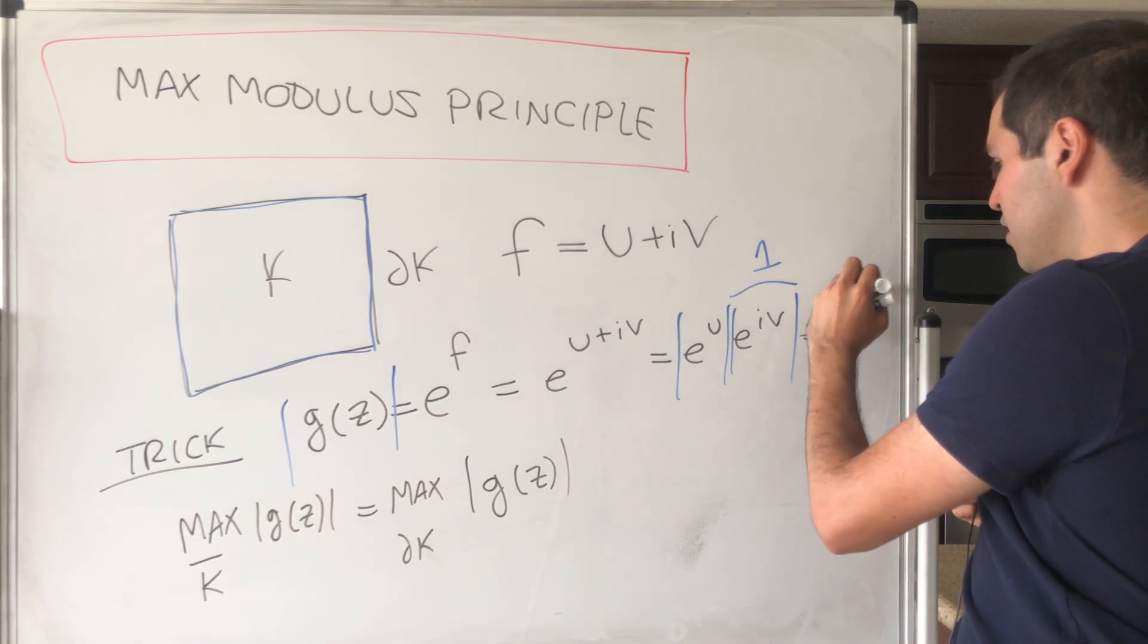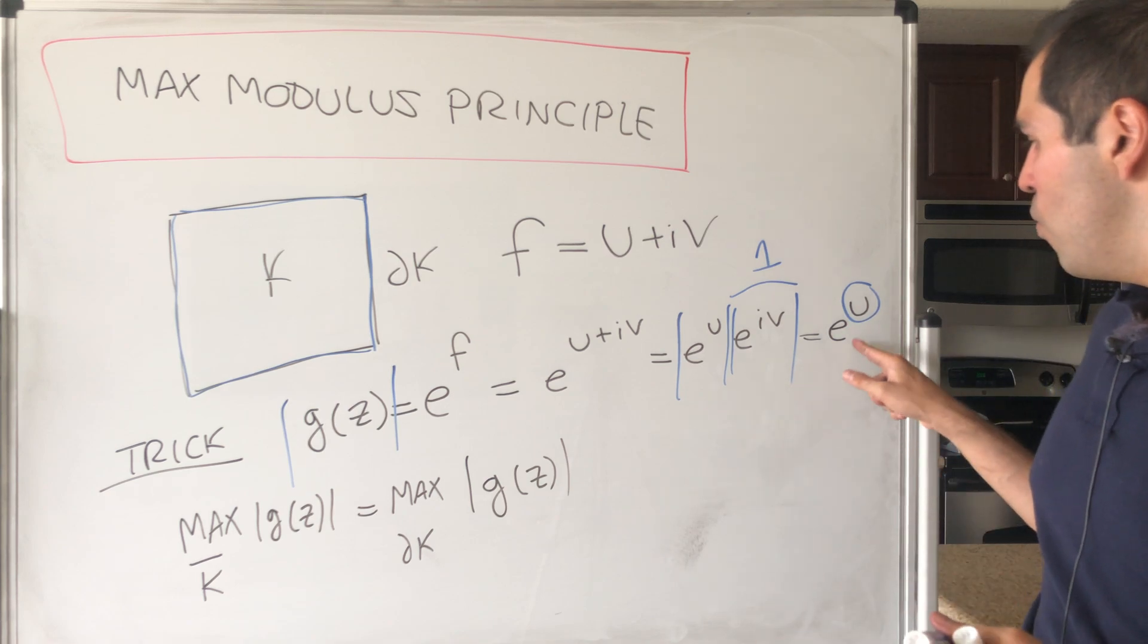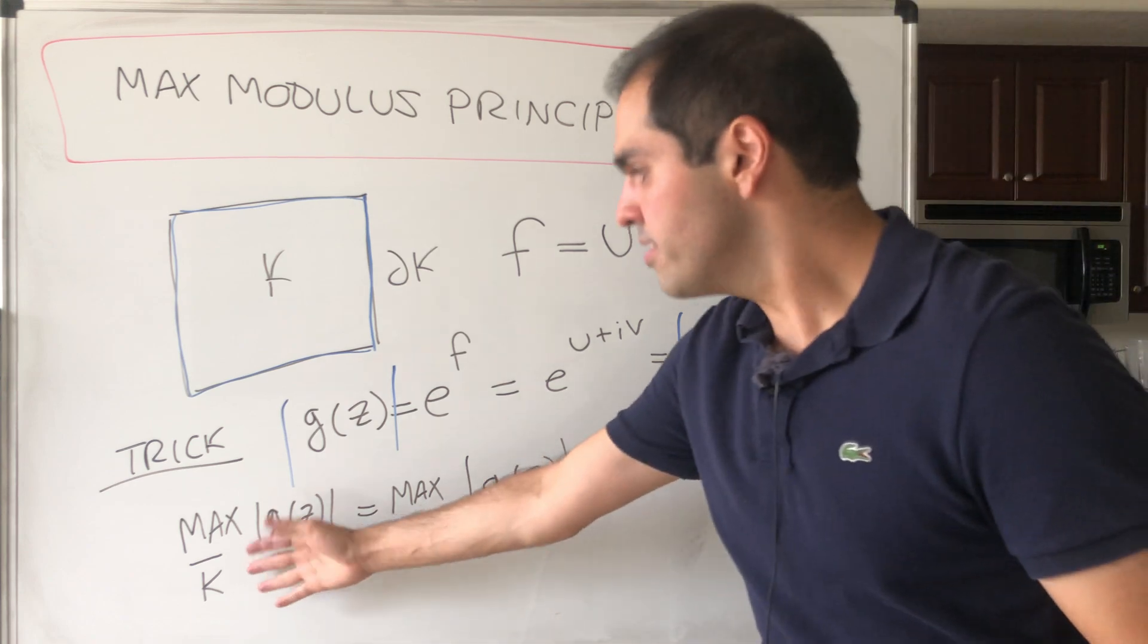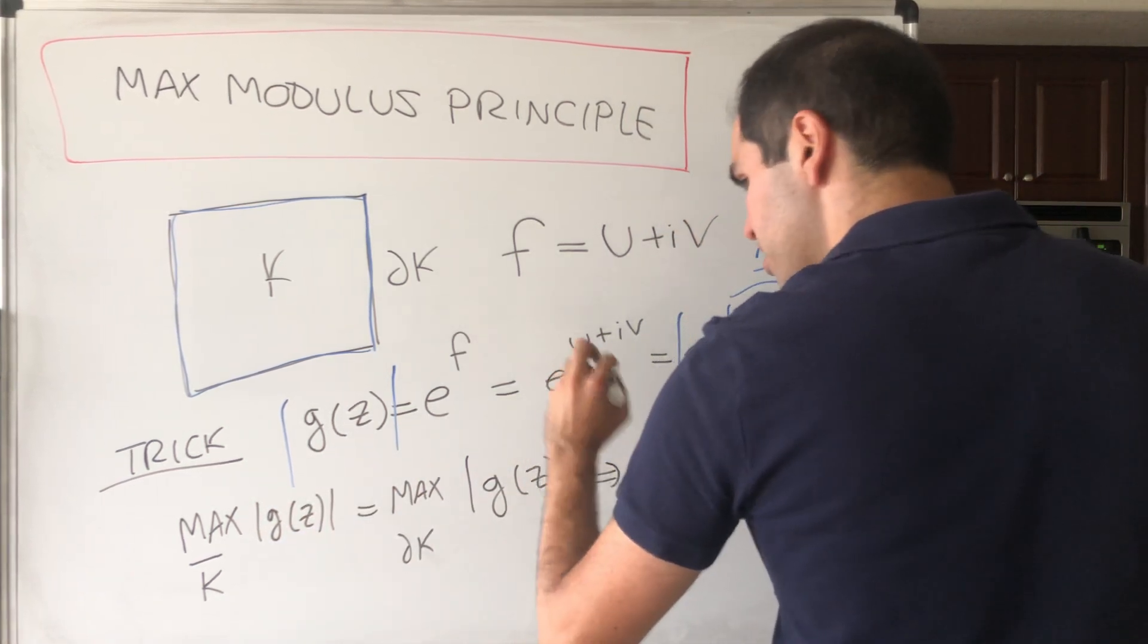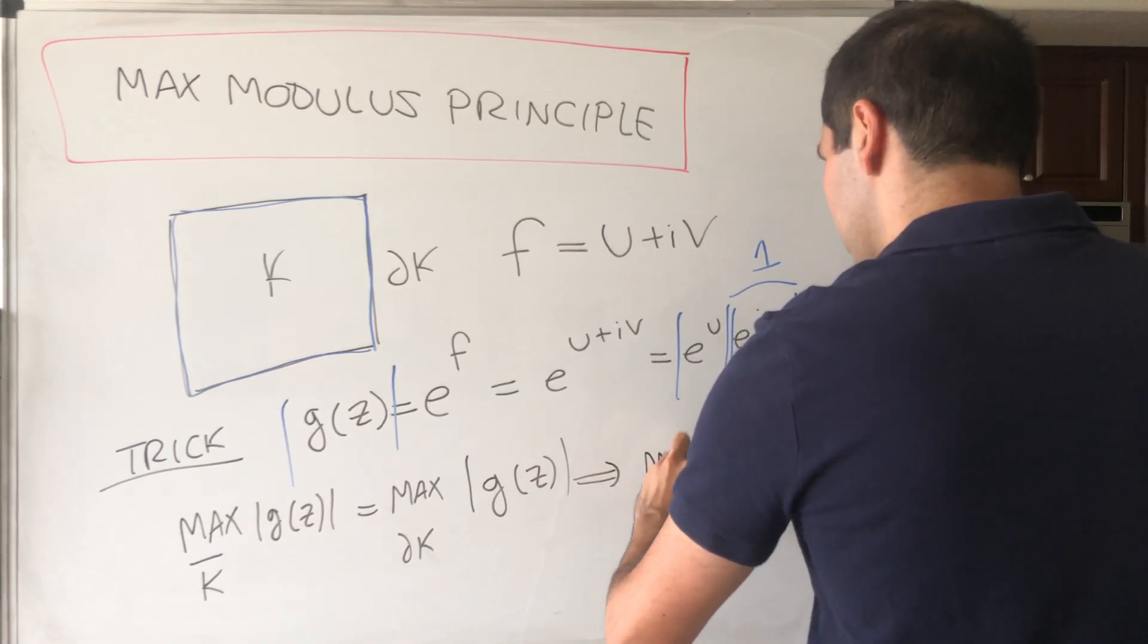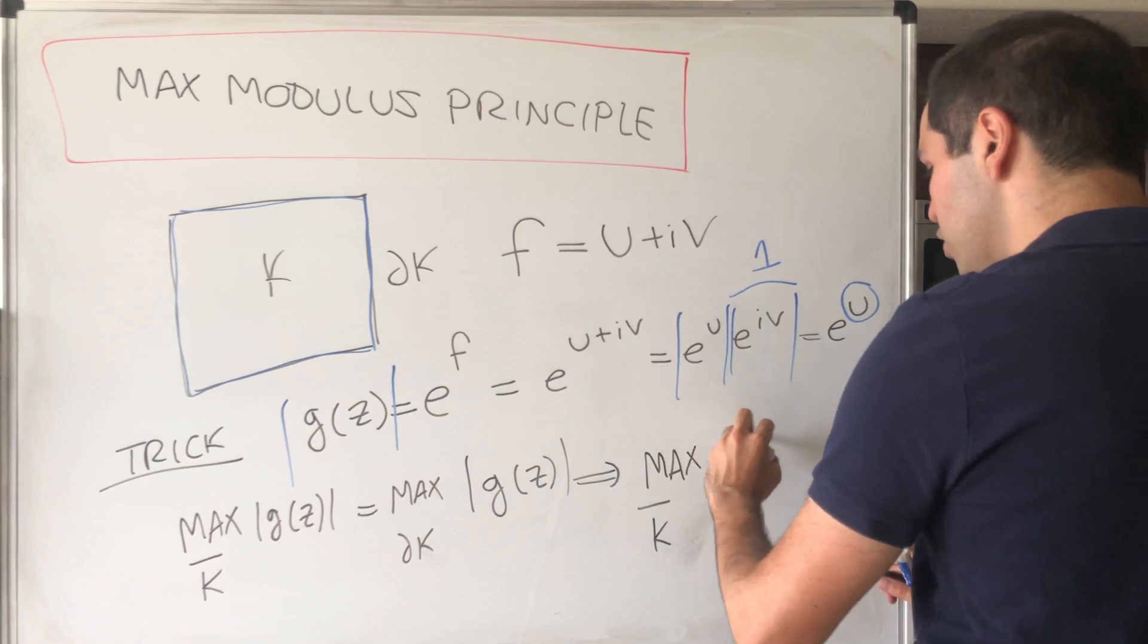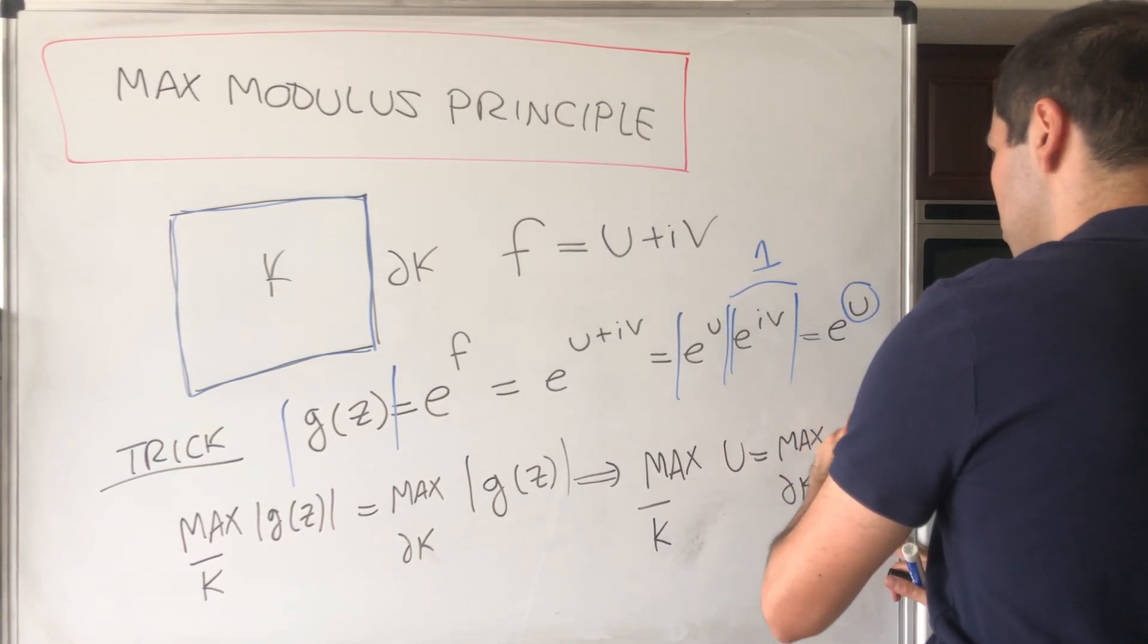The biggest value of e^u is attained whenever u has its biggest value, and vice versa. So what this actually turns out to be is simply the following: it just says that the maximum value on the whole set K-bar of u is just the maximum value of u but on the boundary.